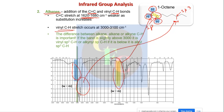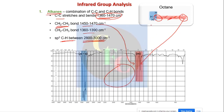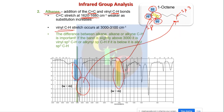Going from octane to octene — just one double bond change — the complexity of the spectrum increases enormously. The fingerprint region already has more peaks due to other interactions. The main things to look for are the C=C double bond and the vinyl hydrogen, which appears as an additional peak above 3000 cm⁻¹. Just by looking at these positions, we can say the compound has a carbon-carbon double bond.